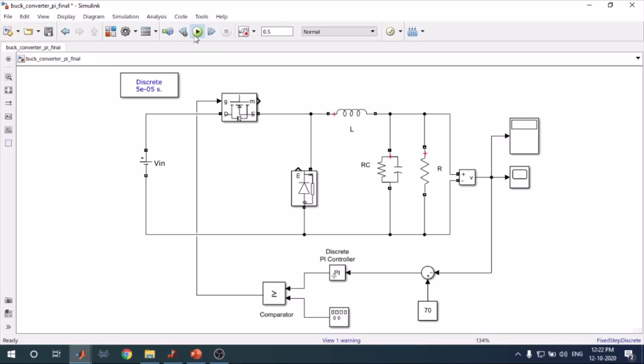And once you run your system, you found that your compiling process is going on. And after that, your run will complete. So you are trying that you want to obtain the output voltage as 70 volt. And you got approximately 70 volt.